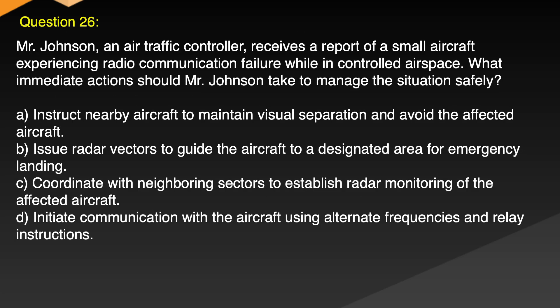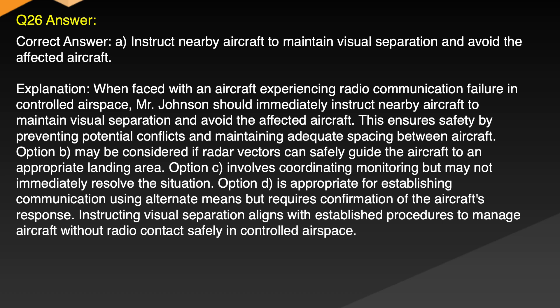Question 26. Mr. Johnson, an air traffic controller, receives a report of a small aircraft experiencing radio communication failure while in controlled airspace. What immediate actions should Mr. Johnson take to manage the situation safely? A. Instruct nearby aircraft to maintain visual separation and avoid the affected aircraft. B. Issue radar vectors to guide the aircraft to a designated area for emergency landing. C. Coordinate with neighboring sectors to establish radar monitoring of the affected aircraft. D. Initiate communication with the aircraft using alternate frequencies and relay instructions. Correct answer: A. Instruct nearby aircraft to maintain visual separation and avoid the affected aircraft.